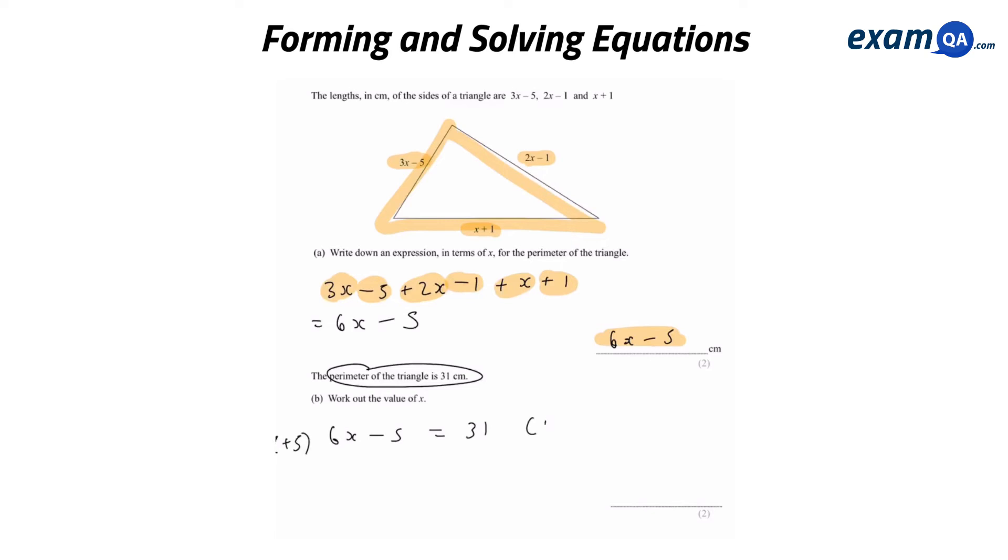Plus 5 to both sides to get rid of this minus 5. I'm left with 6x. That's equal to 31 plus 5, 36. And finally, to get rid of this 6, we're going to divide both sides by 6. This goes away. I'm left with x equals 6. And there you have it, x equals 6. Can you see the pattern? So we're just looking at a question, we're writing down what we know, and we're forming and solving equations as we go along.